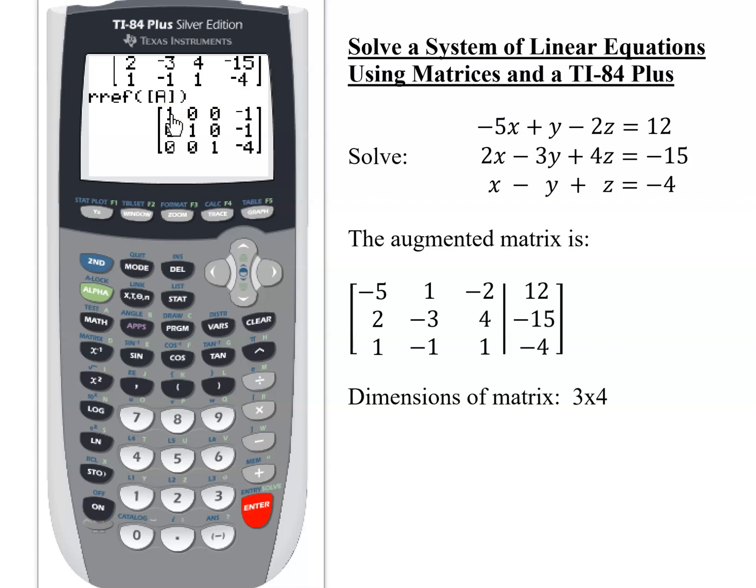Remember, the first column was x's. So 1x, no y, no z. So x equals negative 1. Row 2 says I have no x's, 1y, no z's. So y equals negative 1. And last row says no x's and y's, 1z. So z equals negative 4. So my solution is just negative 1, negative 1, and negative 4.